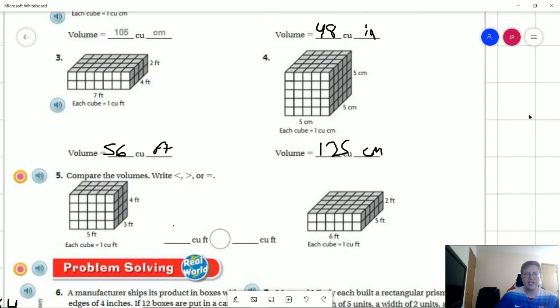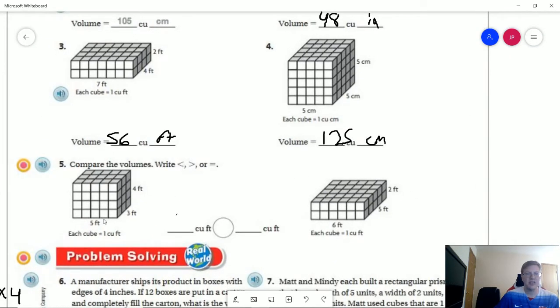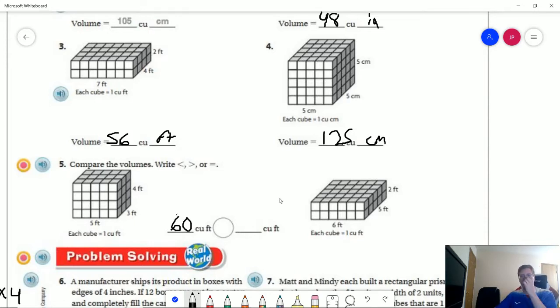Number five, we are comparing these two shapes. So we can do 5 times 3 to get 15. 15 times 4 gives us 60. And then you could also do 4 times 3 to get 12, and 12 times 5, you could do it that way as well. And then for our other side, 6 times 5 gives us 30, times 2 gives us 60. So both of these are equal.